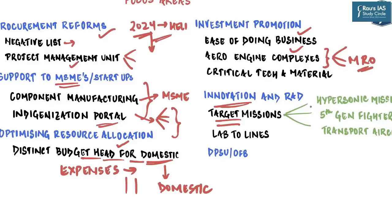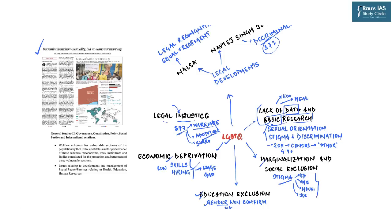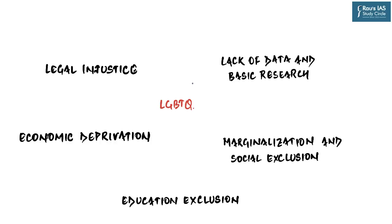The next article on page number seven is 'Decriminalizing homosexuality but no same-sex marriage,' discussing various issues and challenges faced by the LGBTQ community. LGBTQ stands for Lesbian, Gay, Bisexual, Transgender, and Queer. Under the GS Paper 2 syllabus, welfare schemes for vulnerable sections and mechanisms, laws, and institutions constituted for the protection of vulnerable sections are relevant — and today's discussion will focus on the issues faced by the LGBTQ community.